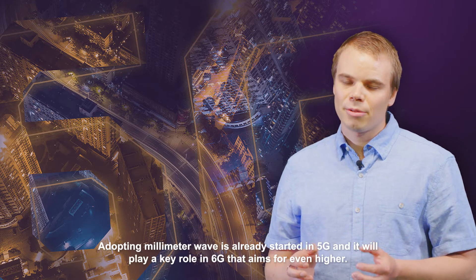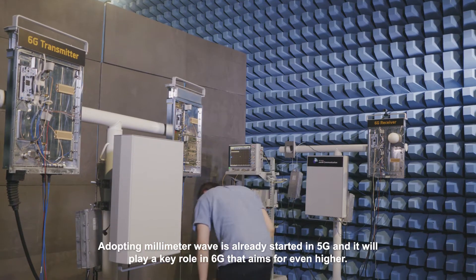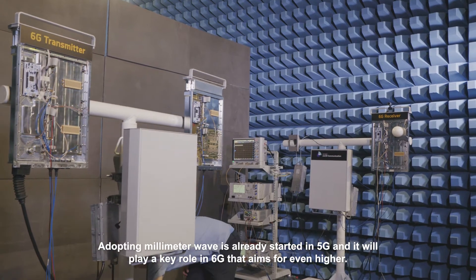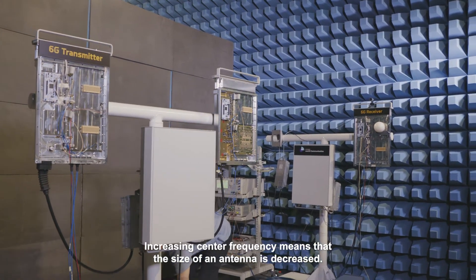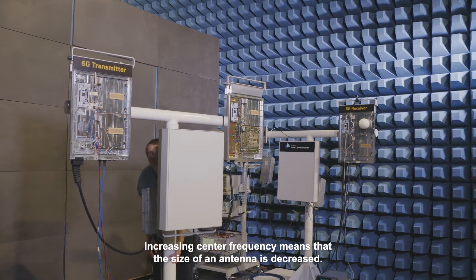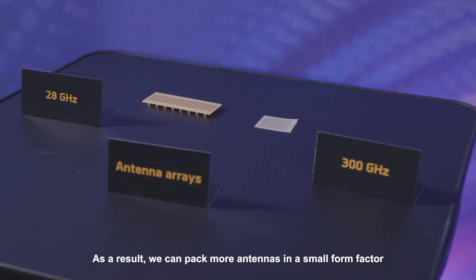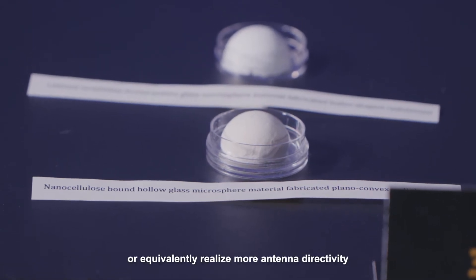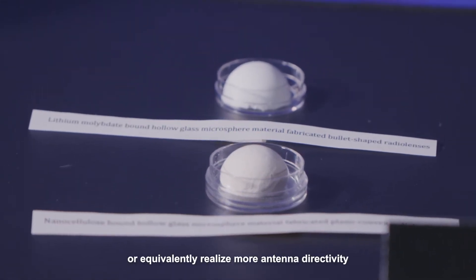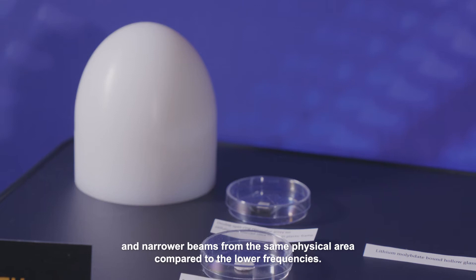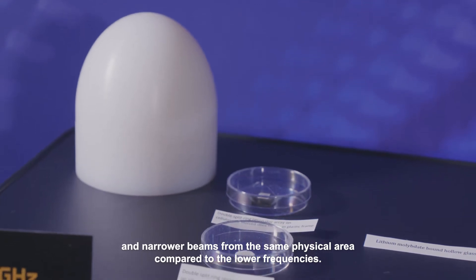Adopting millimeter wave already started in 5G and will play a key role in 6G that aims for even higher. Increasing center frequency means that the size of an antenna is decreased. As a result we can pack more antennas in a small form factor or realize more antenna directivity and narrower beams from the same physical area compared to lower frequencies.